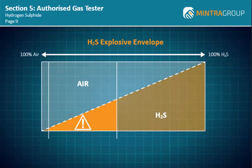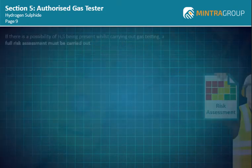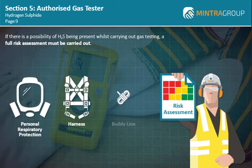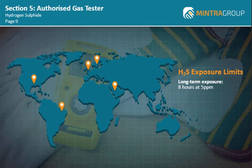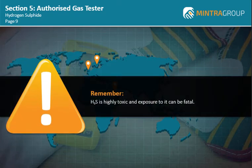The explosive envelope of H2S ranges from 4.3% to 46% by volume in air. If there is a possibility of H2S being present whilst carrying out gas testing, a full risk assessment must be carried out, and safety precautions such as personal respiratory protection, harness and buddy line may be required. As a general rule of thumb, the long-term exposure limit is 8 hours at 5 ppm and the short-term exposure limit is 15 minutes at 10 ppm. Always check the H2S exposure limits of the country that you are working in. Remember, H2S is highly toxic and exposure to it can be fatal.